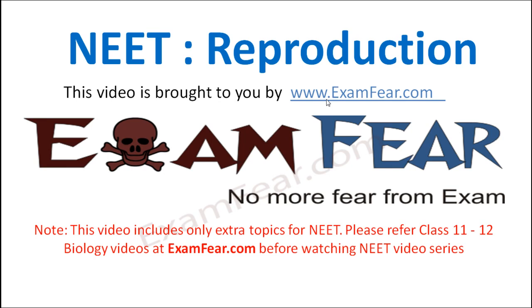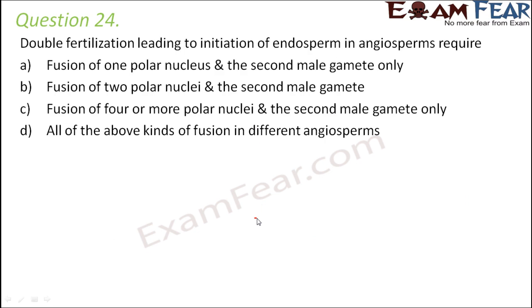Hello friends, this video on NEET reproduction is brought to you by examfear.com — no more fear from exam. Question number 24: Double fertilization leading to initiation of endosperm in angiosperms requires fusion of one polar nucleus and the second male gamete only; fusion of two polar nuclei and the second male gamete; fusion of four or more polar nuclei and the second male gamete only; or all of the above kinds of fusion in different angiosperms.